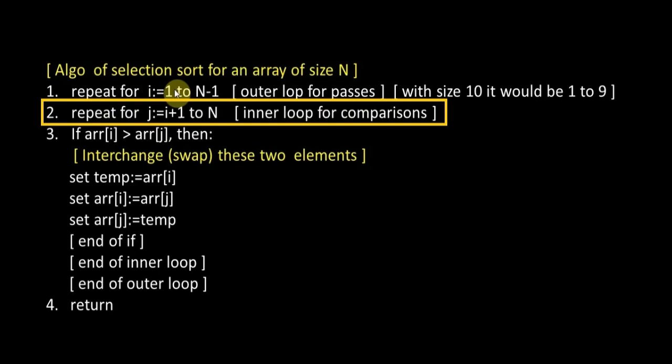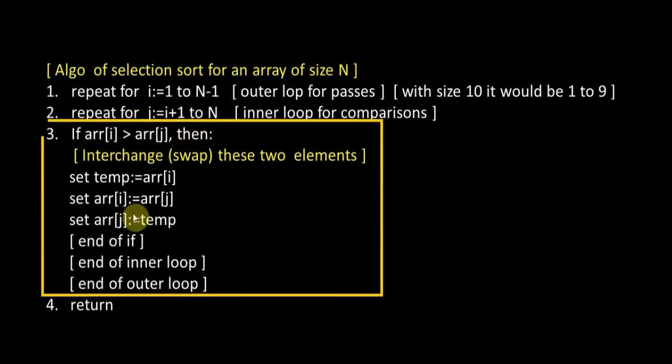I have taken the first subscript to be 1, not 0, because I am writing an algorithm. When it comes within the body of the inner loop, the comparison will be: if arr[i] > arr[j], or if arr[1] > arr[2], then interchanging will take place if required.